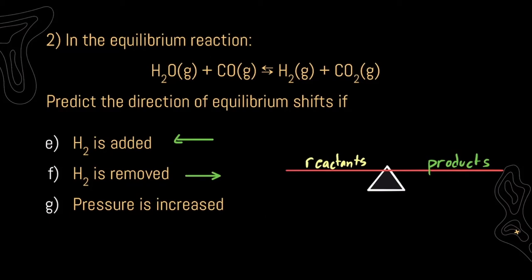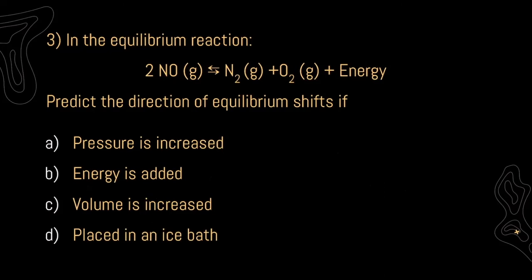Lastly, what happens when we increase our pressure? Let's look at how many moles we have on each side. For our reactants, we have one mole of water vapor and one mole of carbon monoxide. On our products, we have one mole of hydrogen gas and one mole of carbon dioxide. We have two moles on each side, so regardless of whether we change our pressure, the number of collisions are going to stay the same — increasing the pressure is going to have no change. For three, we're given the decomposition reaction between nitrogen monoxide into nitrogen gas and oxygen gas, releasing energy. What happens when we increase our pressure? Which side has more molecules? I have the same amount of moles on my products as on my reactants, so if I increase the pressure, there would be no change in my equilibrium.